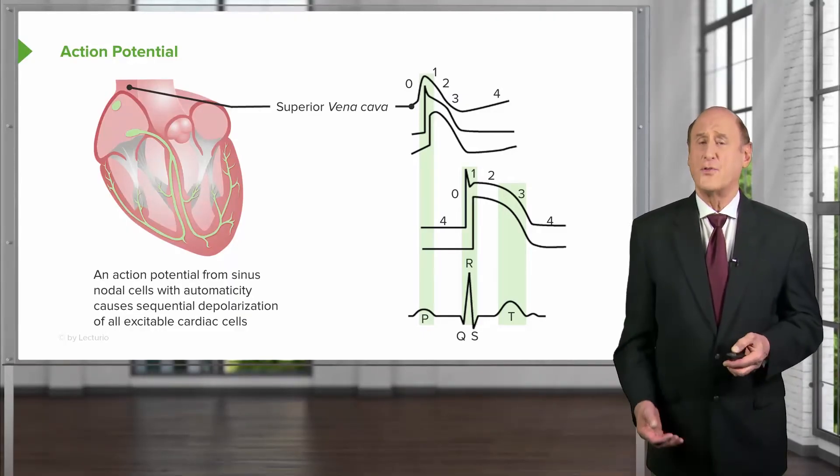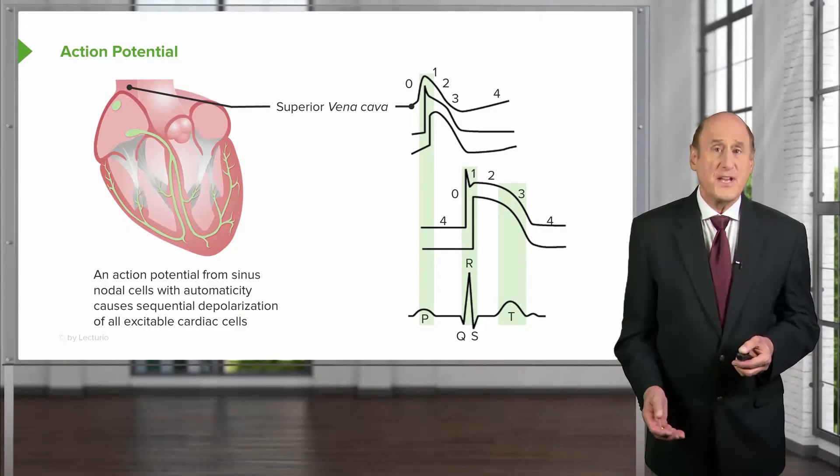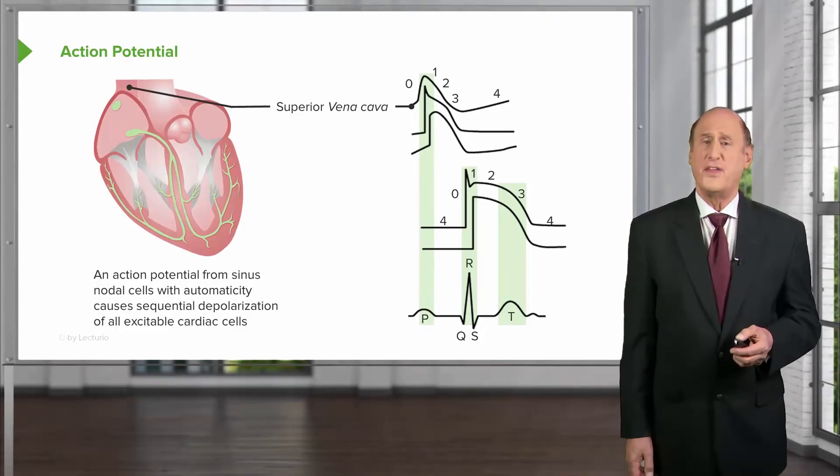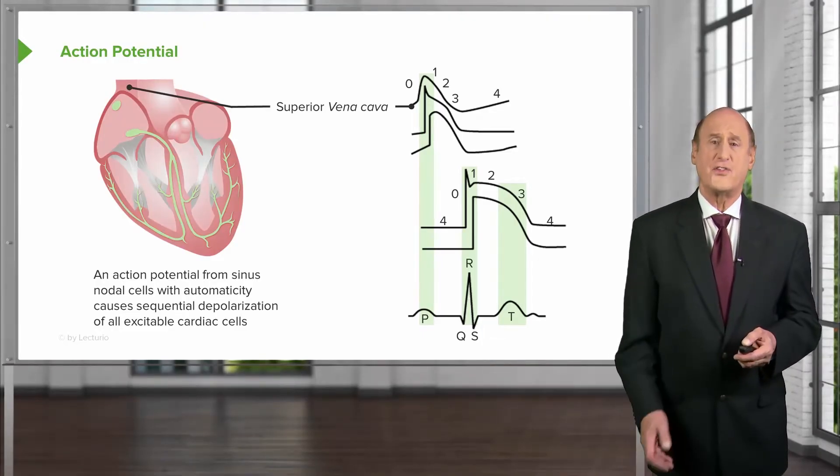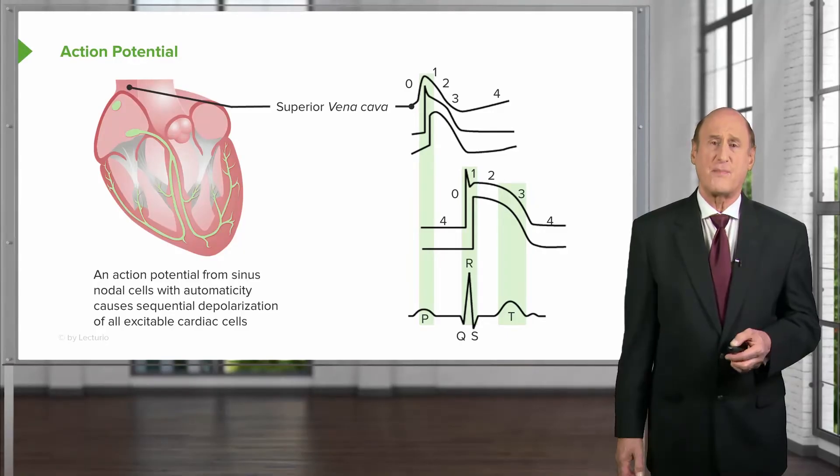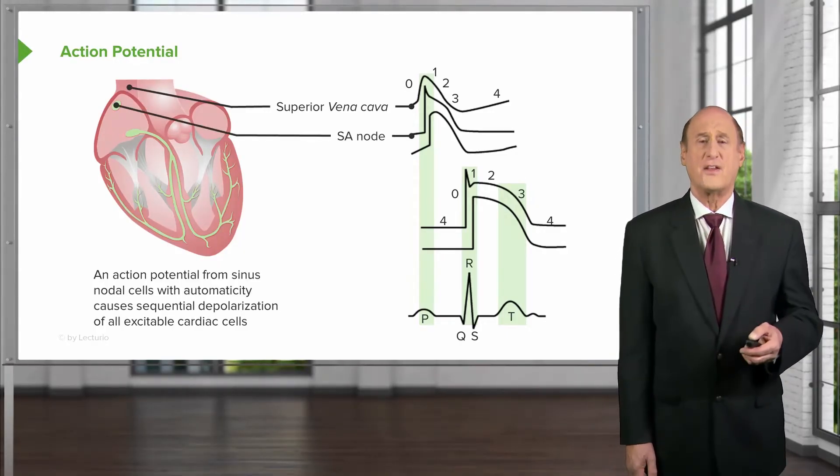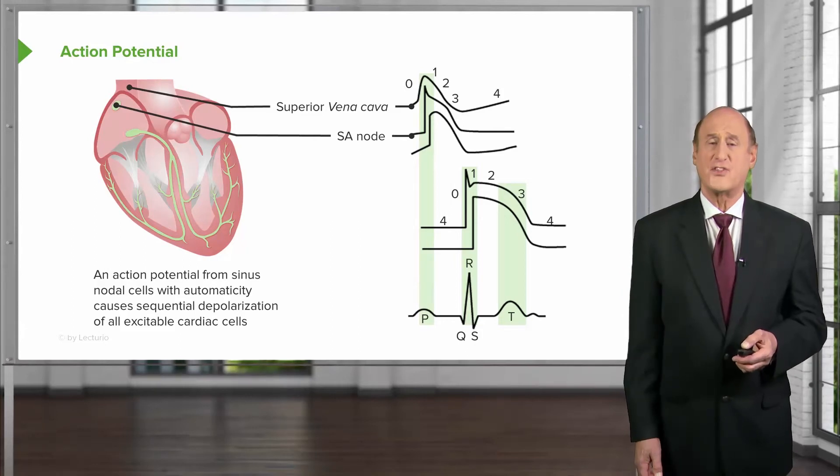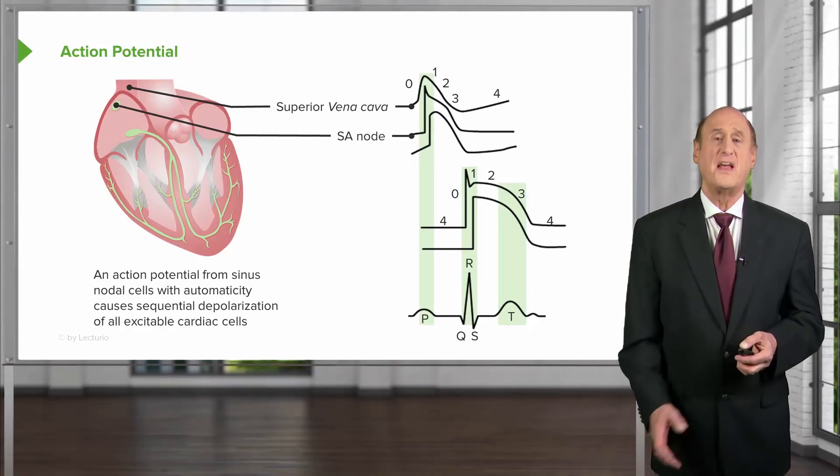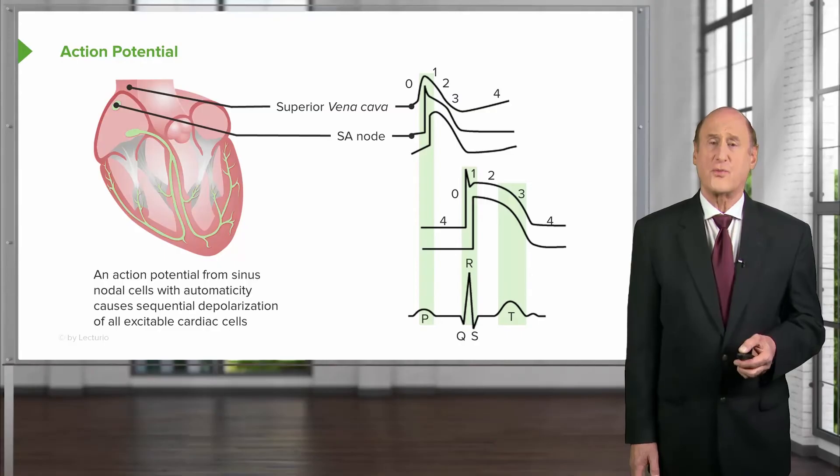This is the action potential for the sinus node, which as you can see, is slowly rising. There's a spontaneous depolarization. But once you get into the atria, into the ventricle, the depolarization is not spontaneous. It's immediate as the wave of depolarization arrives.